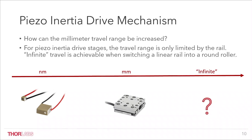For a piezo-inertial drive stage, the travel range is only limited by the rail. So infinite travel is achievable when switching a linear rail into a round roller.